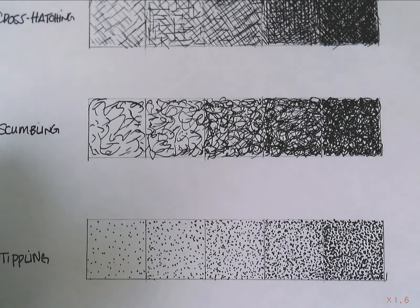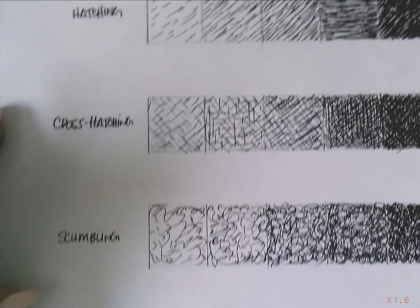And there we go. So those are the four pen and ink marks. Hatching, cross hatching, scumbling, and stippling.